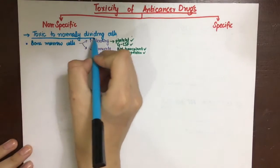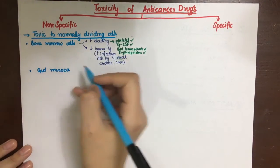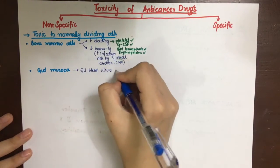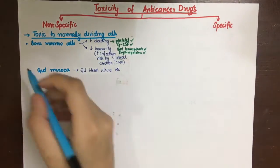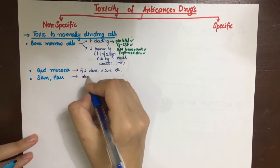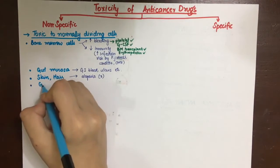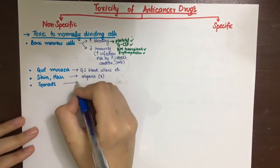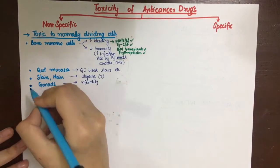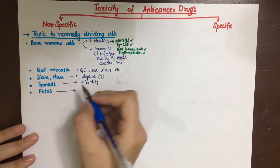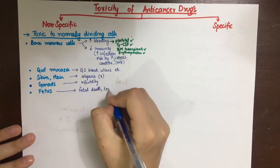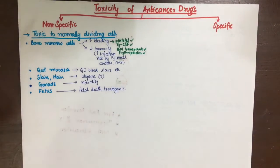Apart from bone marrow, gut mucosal cells are also affected, leading to GI bleeding and ulcers. Skin and hair cells are rapidly dividing, leading to alopecia, which is usually reversible on stopping therapy. The gonads are also affected, leading to infertility in both sexes. In pregnancy, the fetus may undergo abortion and teratogenic effects due to the drugs' mutagenic ability.